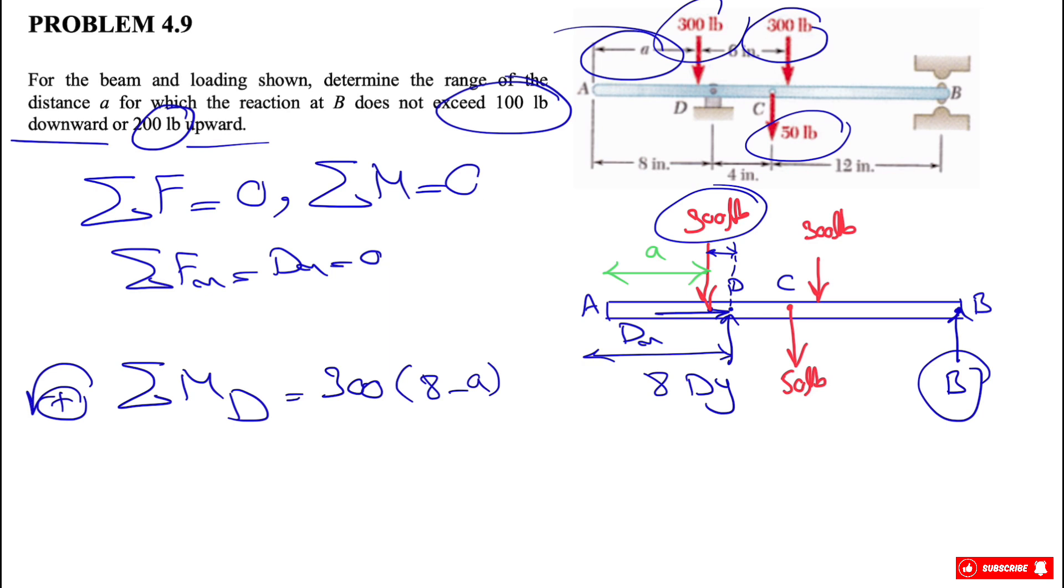Let's move on to the 50 pounds force. The 50 pounds force is making a clockwise moment, so the moment will be negative. And the distance from C to D is what we have here, which is four inches.